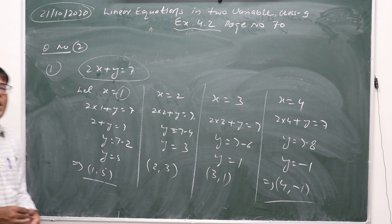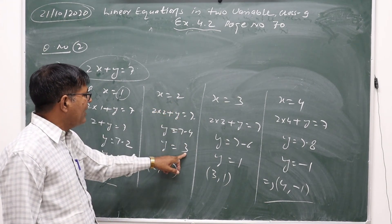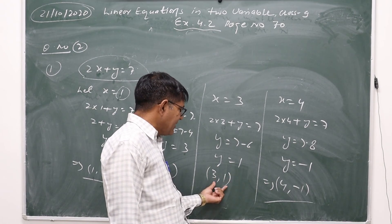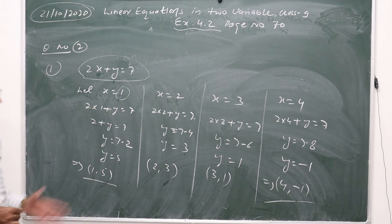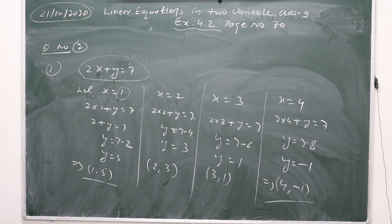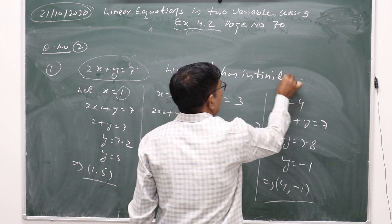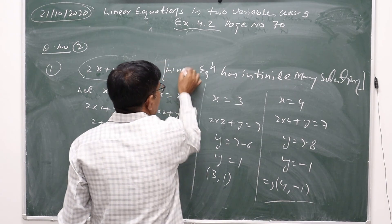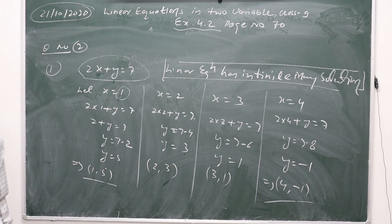So the four sets of solutions are: x=1→y=5, giving (1,5); x=2→y=3, giving (2,3); x=3→y=1, giving (3,1); and x=4→y=-1, giving (4,-1). Always remember, every linear equation has infinitely many solutions. Please pause the video and note these down.